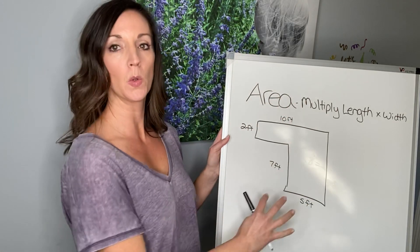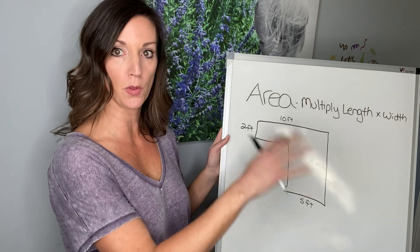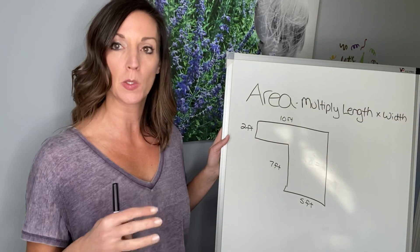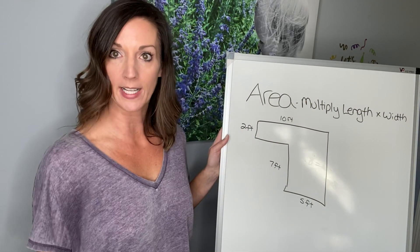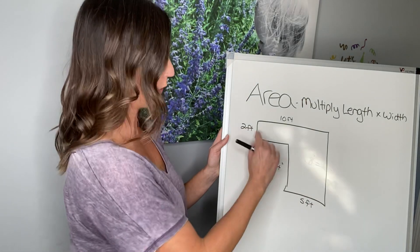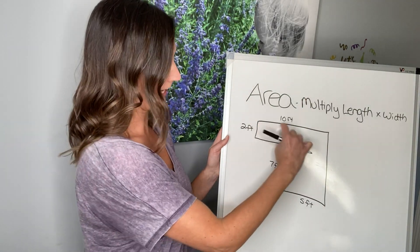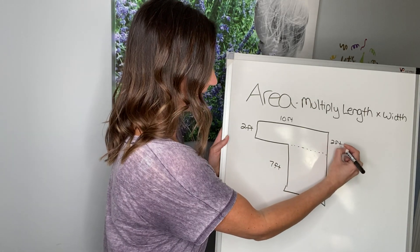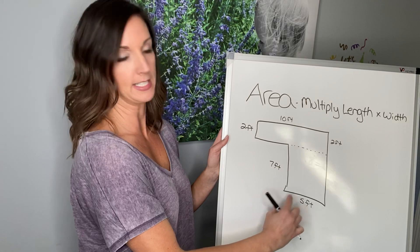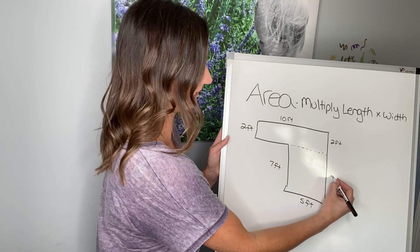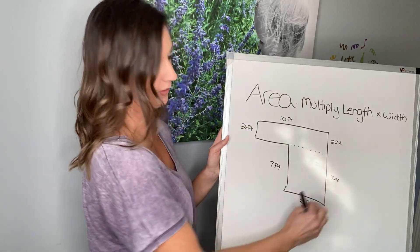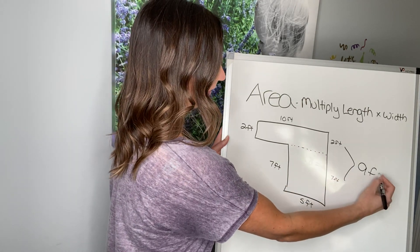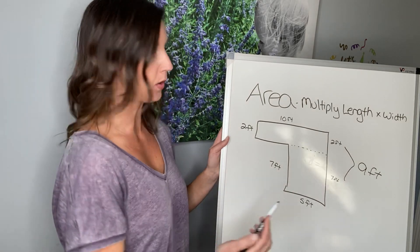Now if we have those dimensions, we can find the rest of the dimensions, even though we don't have this line. Because we have to use what we know about rectangles — the opposite sides of a rectangle are equal in length. So right here, if this is two feet and it came right across here as a dotted line, this would be two feet. And if this is seven feet down here, the dotted line right here would be seven feet. So together, two feet plus seven feet — this whole side would be nine feet.